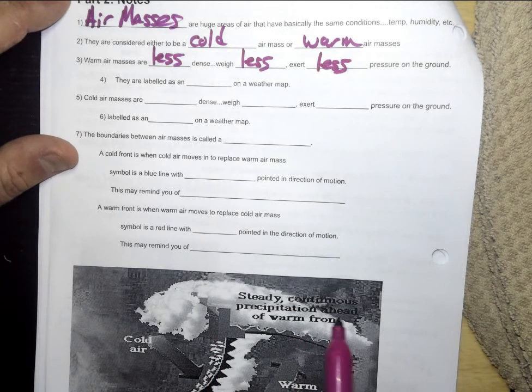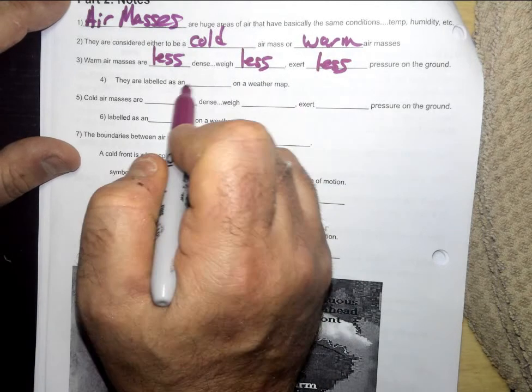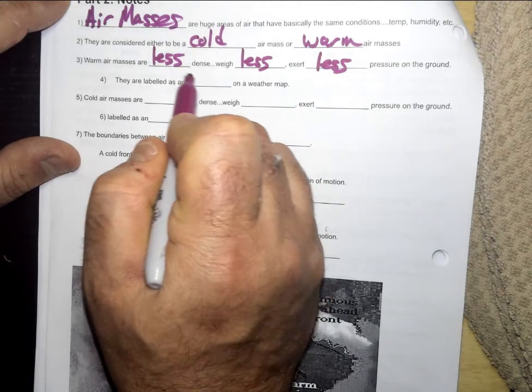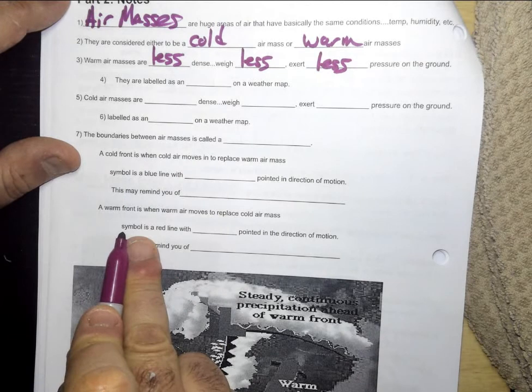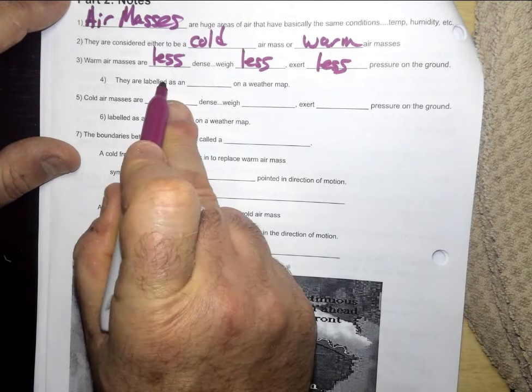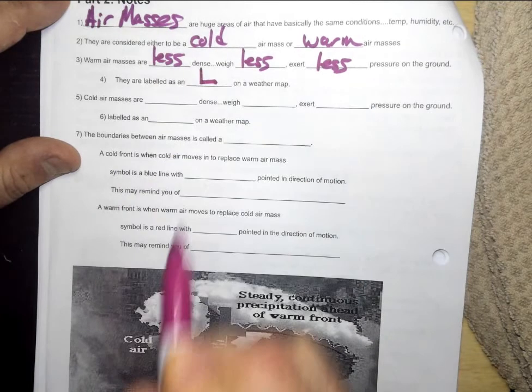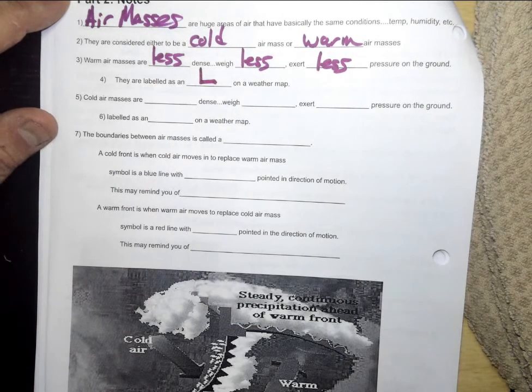They are labeled as, on a weather map, let's see here. Warm air as in L. L for low pressure.